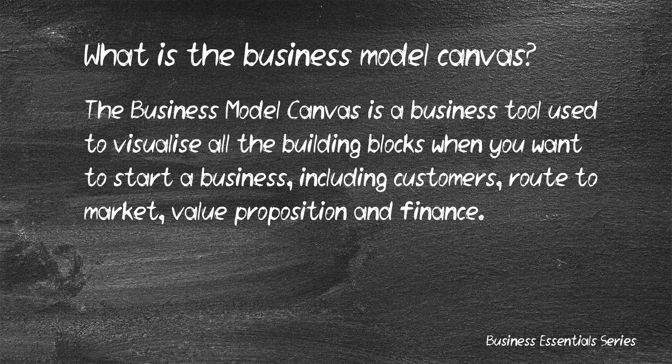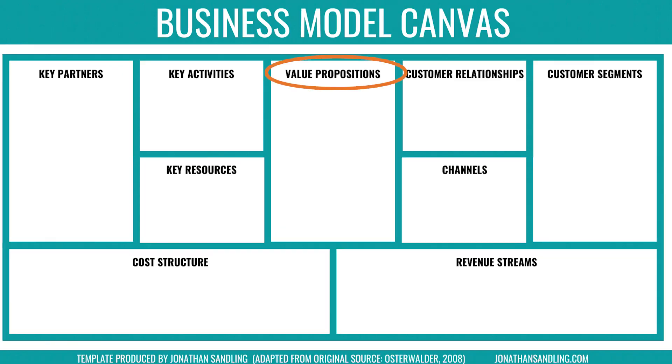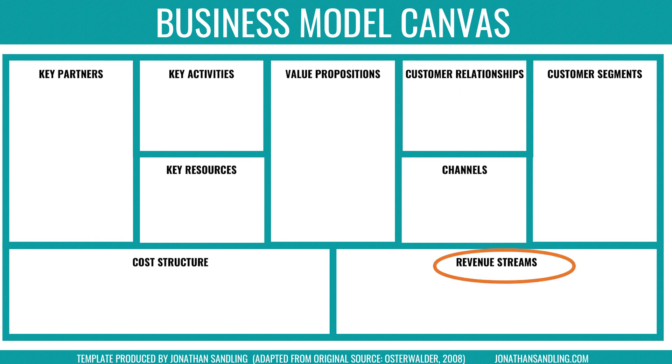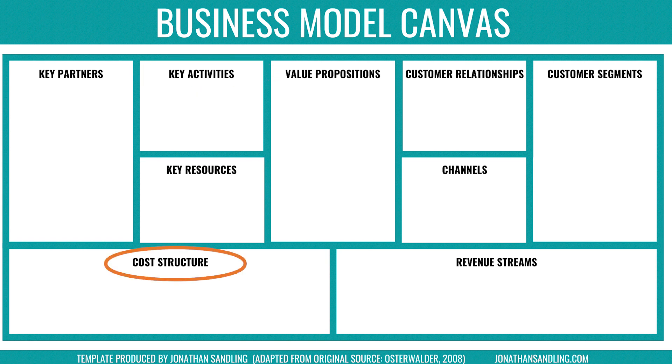The business model canvas is a tool that helps you visualize and think about nine key elements or building blocks of any business. These elements are: the value proposition, customer segments, channels, customer relationships, revenue streams, key resources, key partners, key activities, and cost structure. Once you're able to figure out the details of each of these elements, you'll have a plan that you can build on.